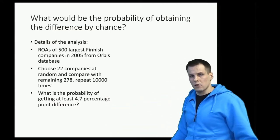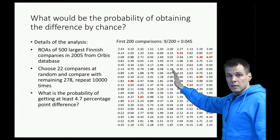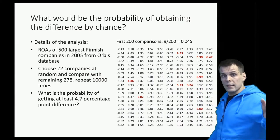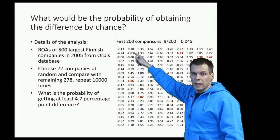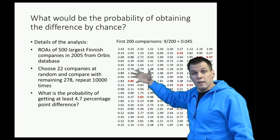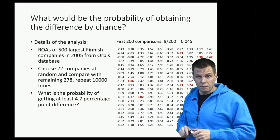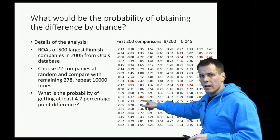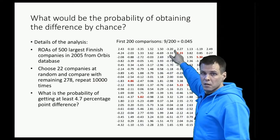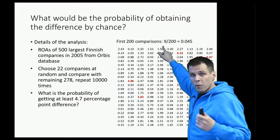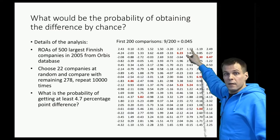Here are the first 200 comparisons. We can see that quite often when we take randomly 22 companies and compare against the 478 remaining, the difference is very close to zero — sometimes we get a negative difference. There is no systematic difference because I chose companies randomly. But we get differences larger than 4.7 in 9 out of 200 comparisons, giving a probability of 0.045 for the first 200 observations.